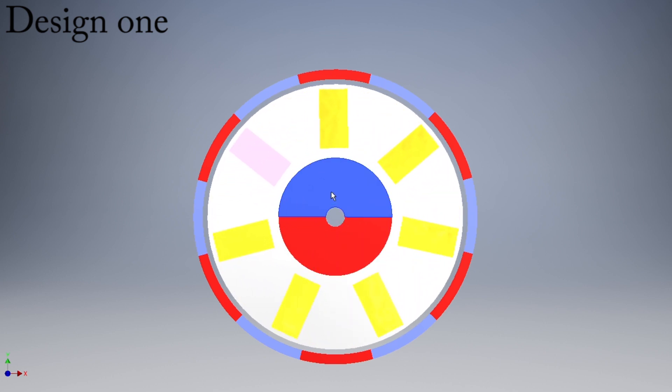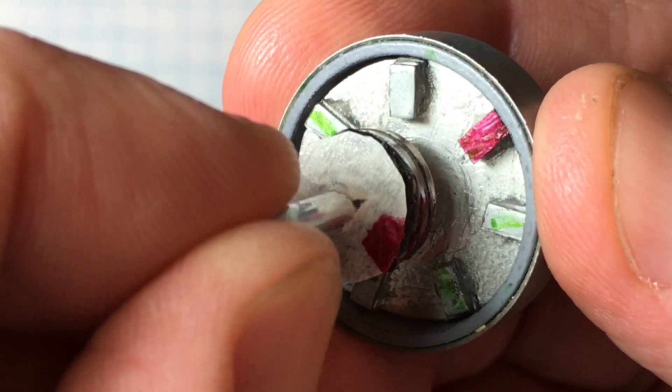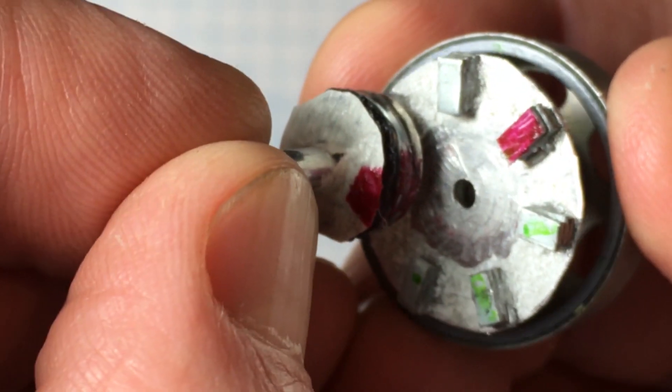How this works: For every turn of the center input magnets, the output flux plate rotates one magnetic pair. This is similar to a cycloidal gearbox.